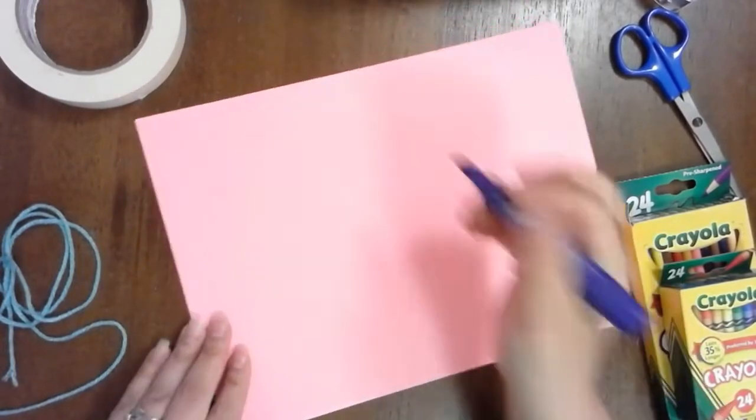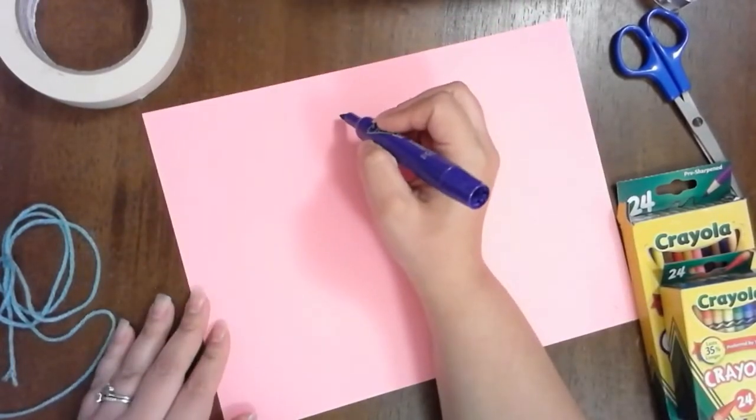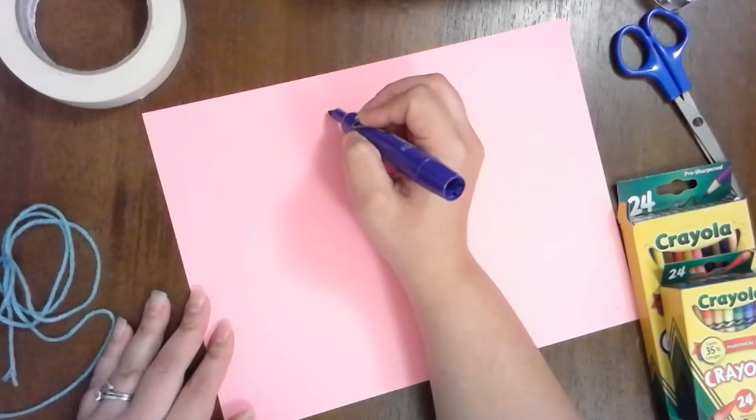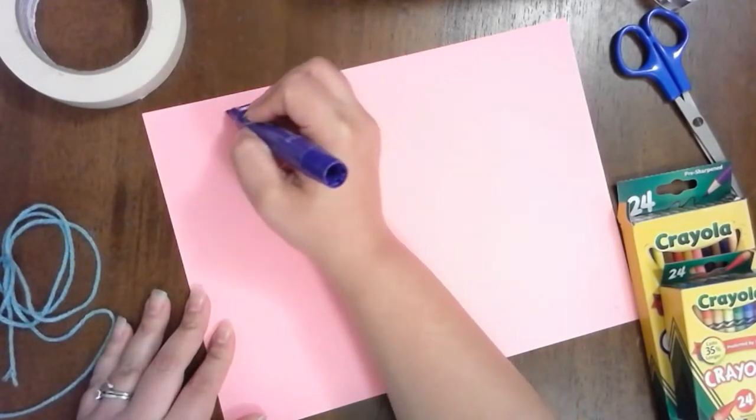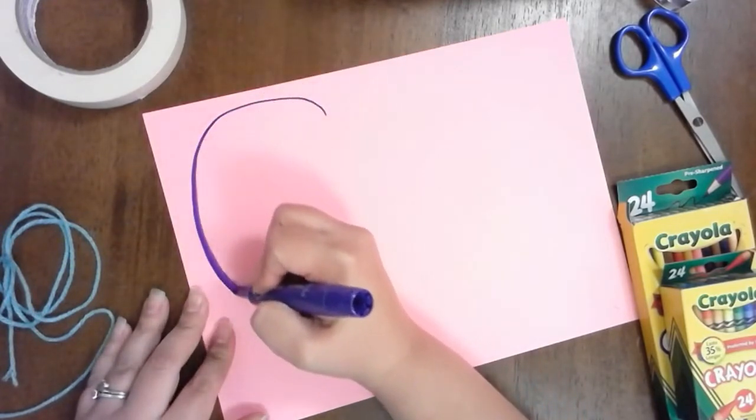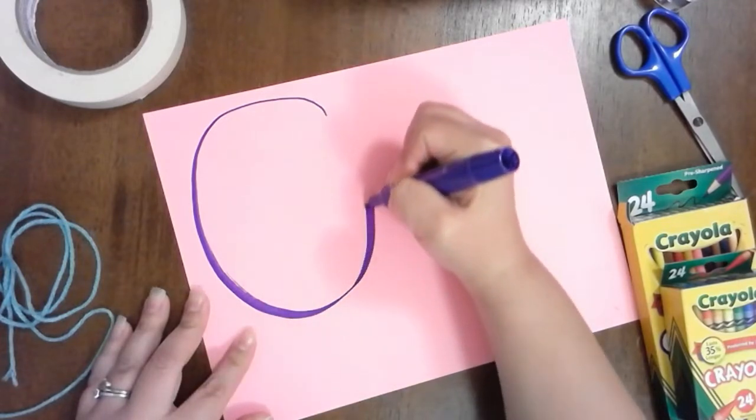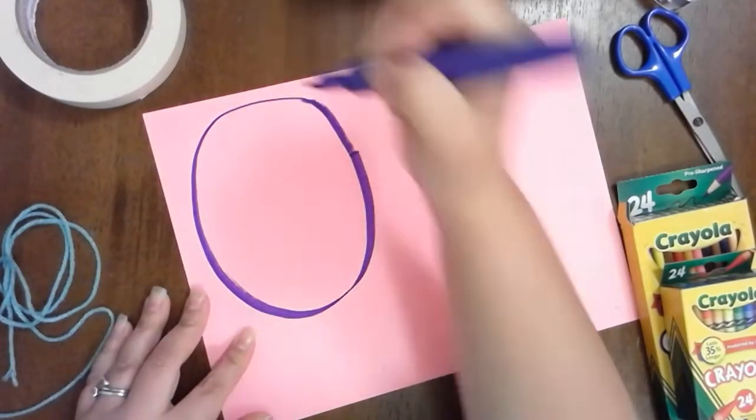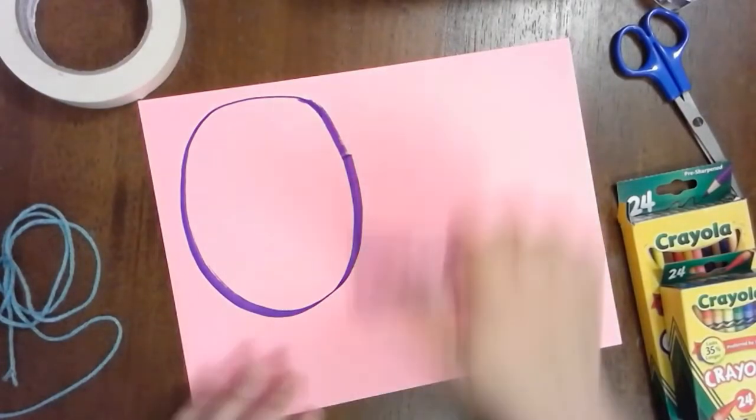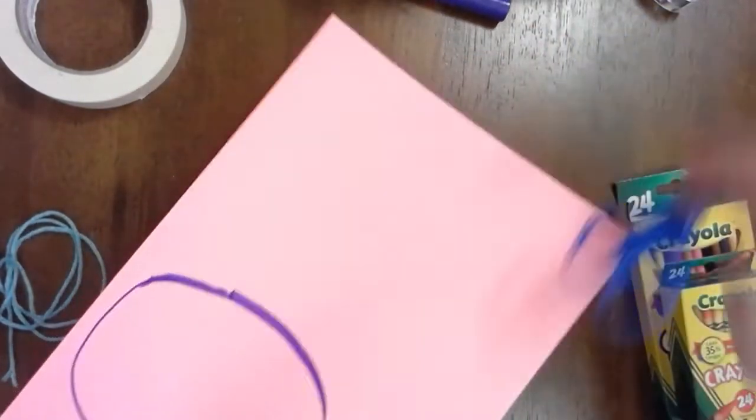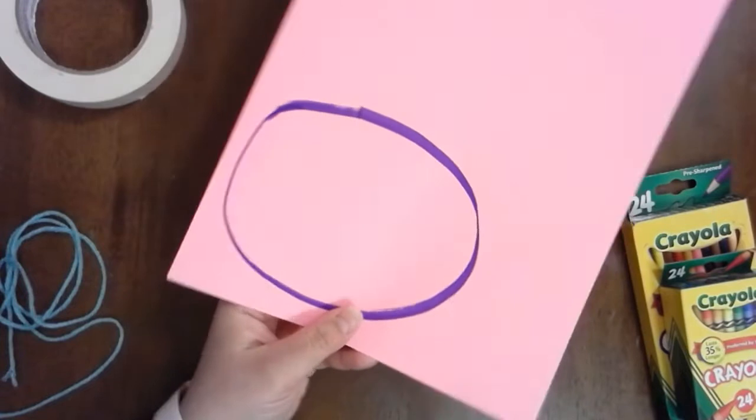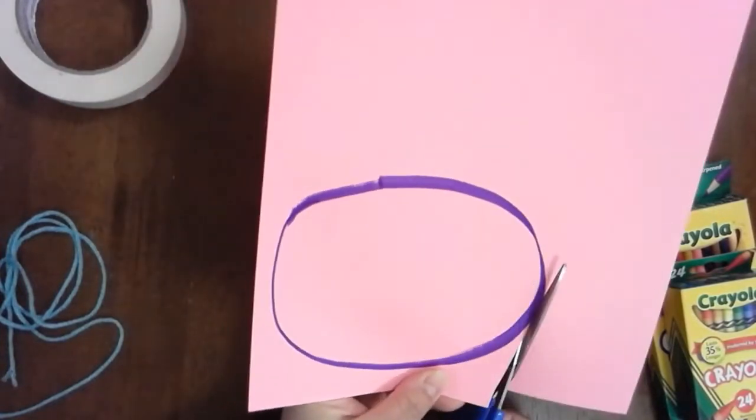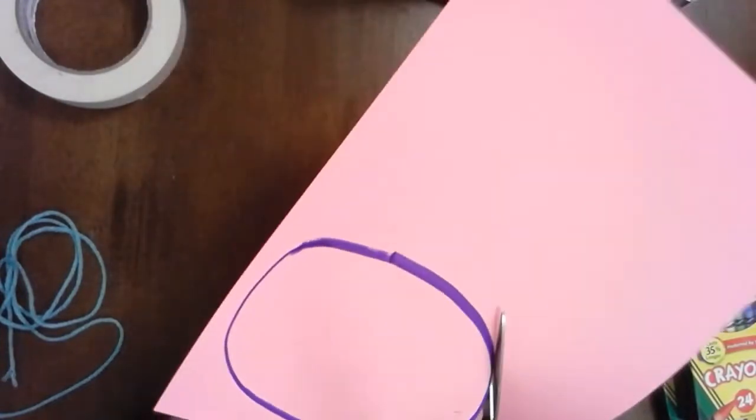The first thing you're going to do is you're going to start out by drawing some shapes. You want to make them kind of big. This circle takes up about half the page. After you draw your shape, you're going to cut it out.